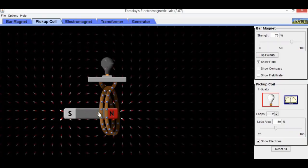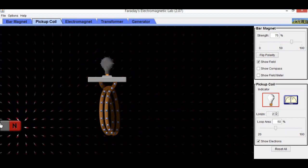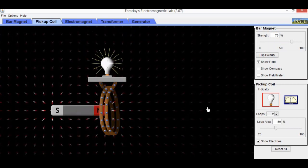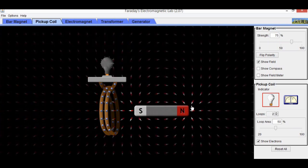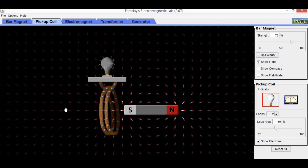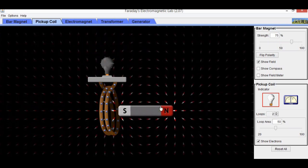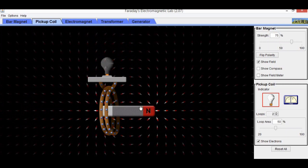We can see this with the help of PHET simulation as well. When a bar magnet crosses the solenoid, current is generated twice as a result of change in magnetic field. Direction of induced current is different in a single pass.